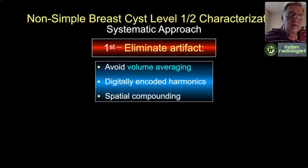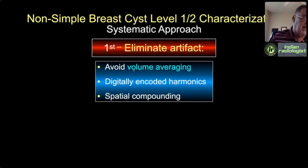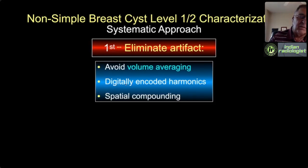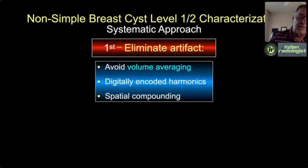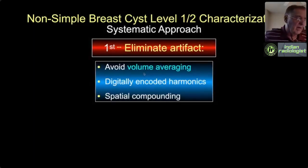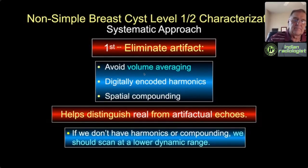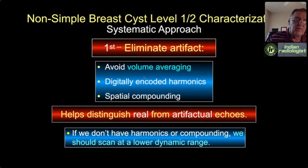We can make sure we're focusing correctly, because without focal zones at the right spot even a high-quality machine will volume-average black microcysts with white fibrous tissue and create solid-gray-appearing centers. One way to avoid creating artificial non-simple cysts is by using harmonics and spatial compounding, and carefully moving focal zones. Without harmonics or compounding, you probably need to scan at lower dynamic range—around 50 dB instead of the 70–105 dB range of top-of-the-line machines.